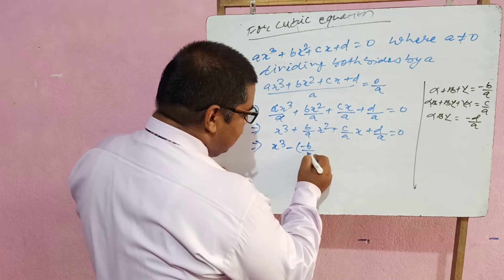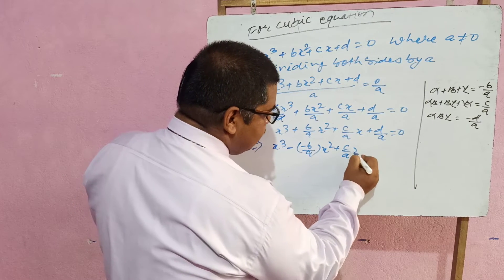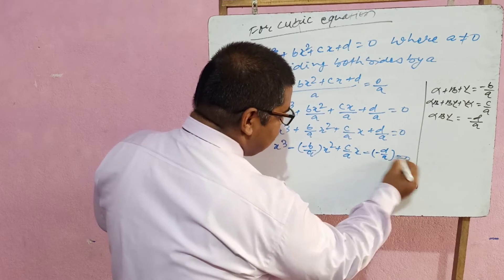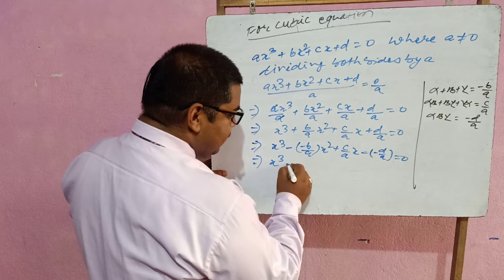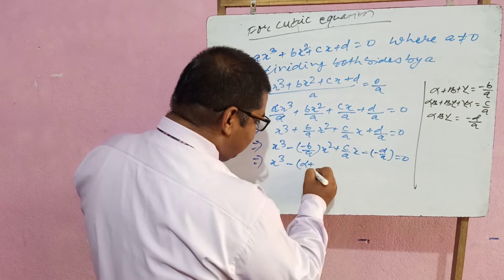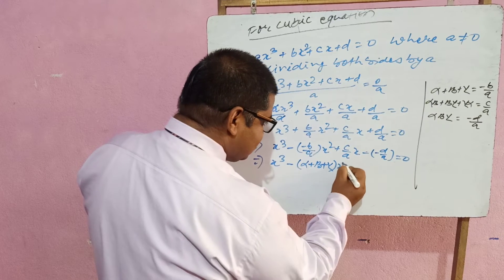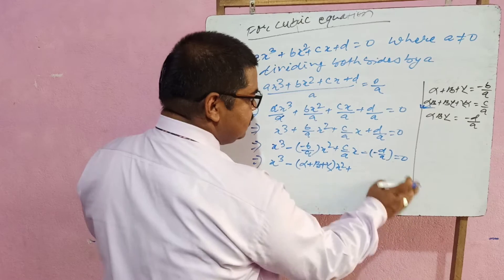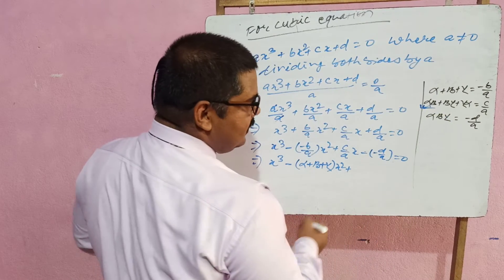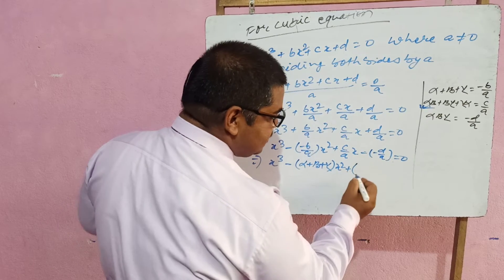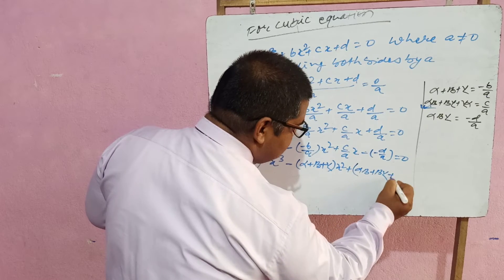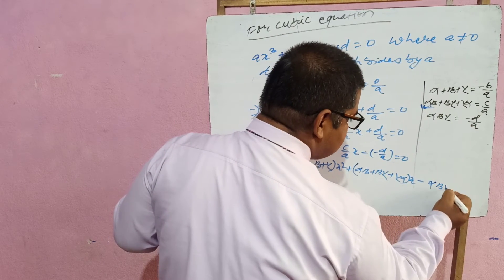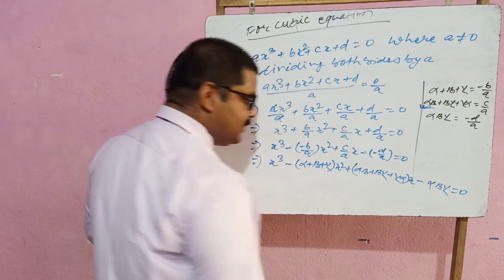Rearranging, the cubic equation becomes: x³ − (−B/A)x² + (C/A)x − (−D/A) = 0. Substituting the zero relations: −B/A = alpha + beta + gamma, C/A = alpha·beta + beta·gamma + gamma·alpha, and D/A = alpha·beta·gamma. So: x³ − (alpha + beta + gamma)x² + (alpha·beta + beta·gamma + gamma·alpha)x − alpha·beta·gamma = 0.